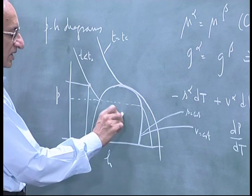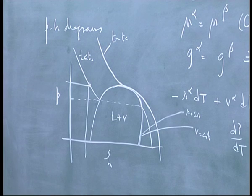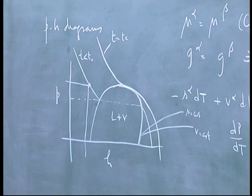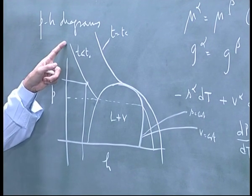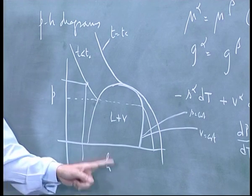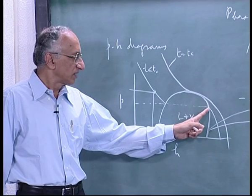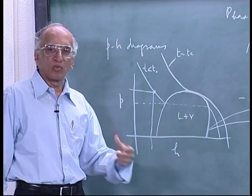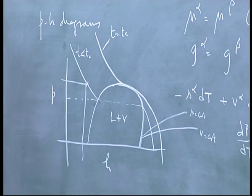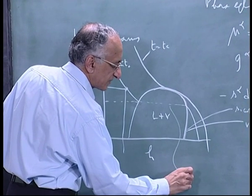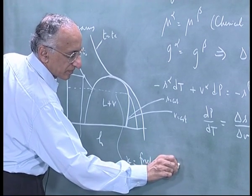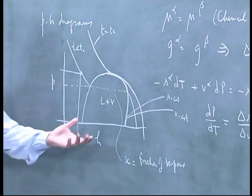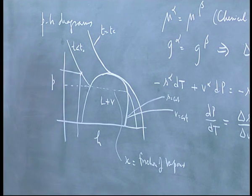Inside this region, this is liquid plus vapor typically. I have given you the chart for methane plotted from experimental data. Here also you need two variables because you have one variable temperature which will determine the pressure and all the values at saturation. But in between, how much of vapor and how much of liquid is present is specified by an extensive variable. The variable here is usually denoted by x equals fraction of vapor. So two variables are required to specify the state of the system.